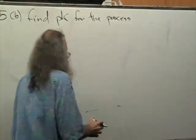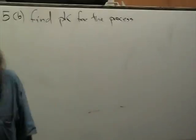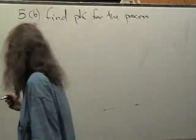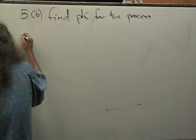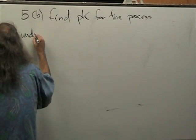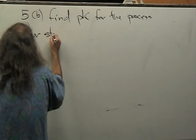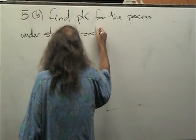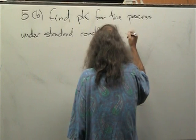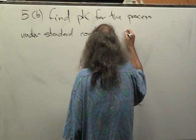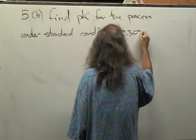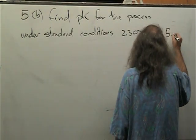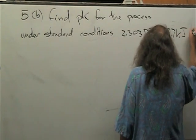And now we can take advantage of the fact that under standard conditions, 2.303RT is equal to 5.7 kilojoules per mole.